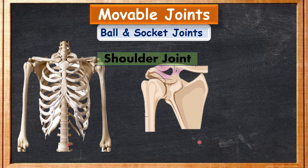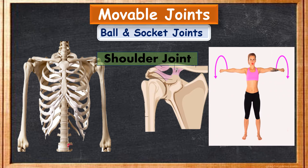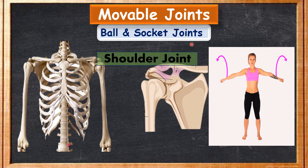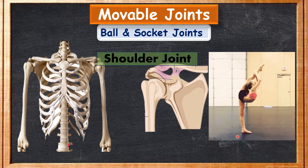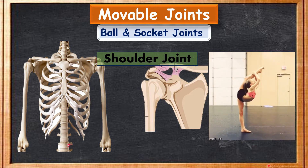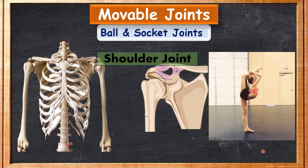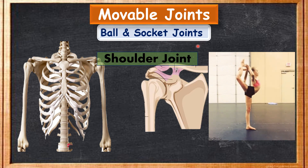This is the shoulder joint, which is in the pectoral girdle. This is how we can move our arms, and this movement is possible because of the ball and socket joint. You can see how beautifully this girl is moving her legs and arms — these movements are possible because of ball and socket joints.